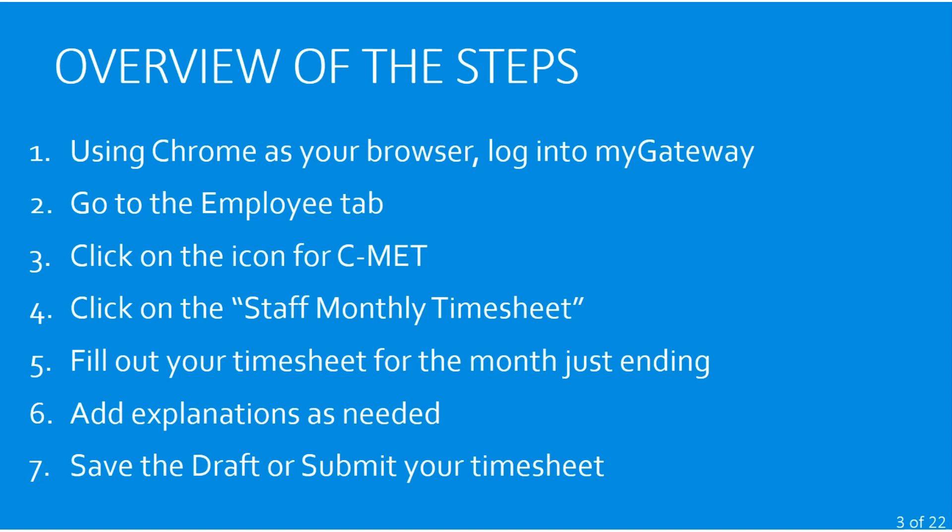Let's go over the steps we'll explain in detail. You're going to use Chrome as your browser, log into MyGateway, then go to the Employee tab. Once you get to the Employee tab, click on the icon for CMET — it looks like the icon you saw on the first page of this presentation. Then you click on the Staff Monthly Timesheet icon and that'll take you to the timesheet itself.